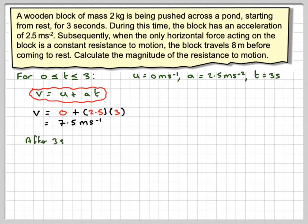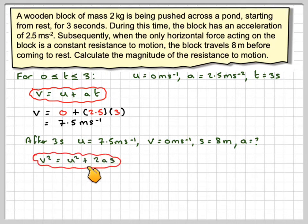Now considering the second bit, so after 3 seconds, u is 7.5 m per second. v will be 0 because it's going to come to rest after it has gone the 8 m. And now we need the acceleration for this part of the journey. So using v squared is equal to u squared plus 2as, we're going to have that 0 squared is going to be equal to 7.5 squared plus 2 times a times my s, which is 8.